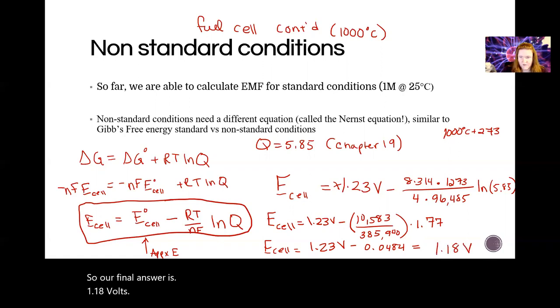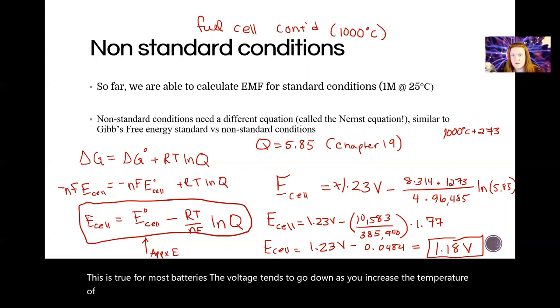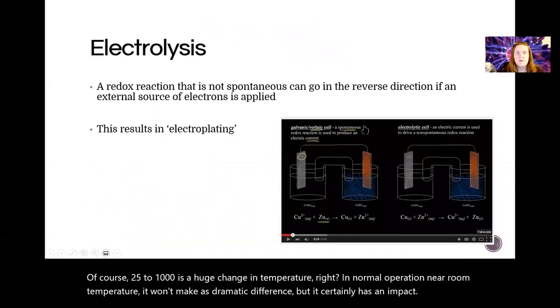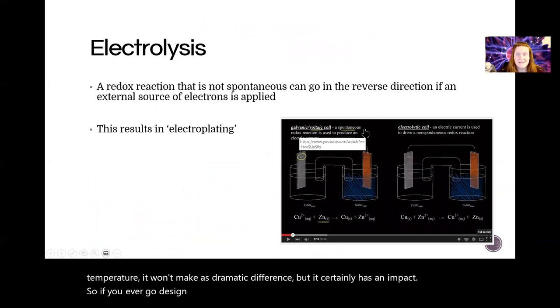This is true for most batteries. The voltage tends to go down as you increase the temperature. Of course, 25 to 1000 is a huge change in temperature, right? In normal operation, near room temperature, it won't make as dramatic of a difference. But it certainly has an impact. So if you ever go design batteries, that's a thing to think about.